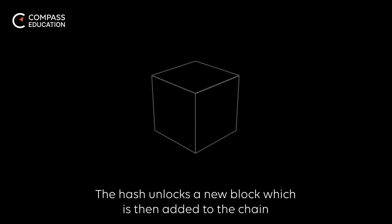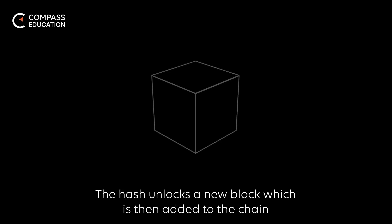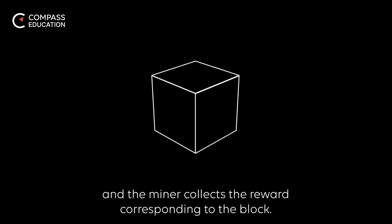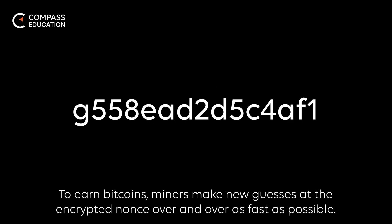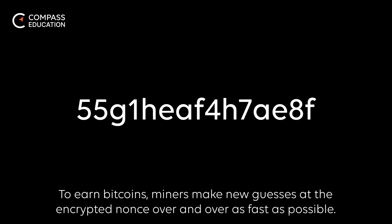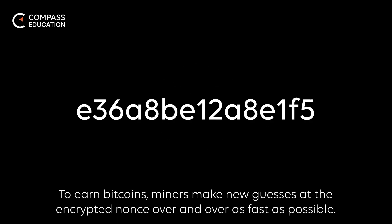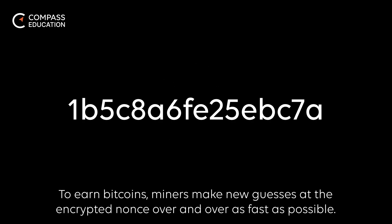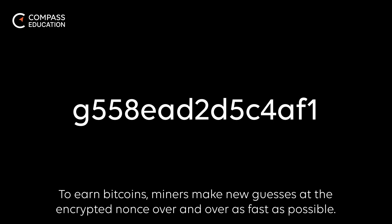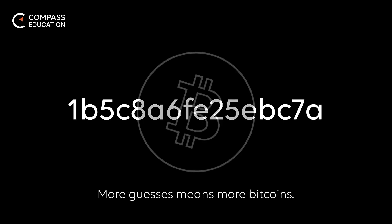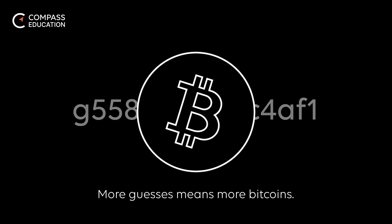The hash unlocks a new block, which is then added to the chain, and the miner collects the reward corresponding to the block. To earn Bitcoins, miners make new guesses at the encrypted nonces over and over as fast as possible. More guesses means more Bitcoins.